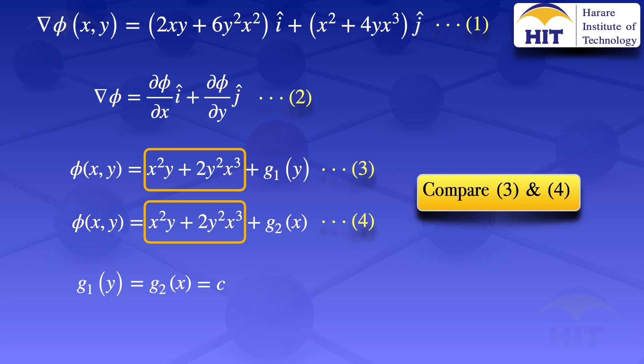Substituting g₁ = c, we get φ(x,y) = x²y + 2y²x³ + c. That is the function φ(x,y) we were looking for, given that grad φ(x,y) = (2xy + 6y²x²)i + (x² + 4yx³)j. If you have any questions, you can let me know in the comment section.